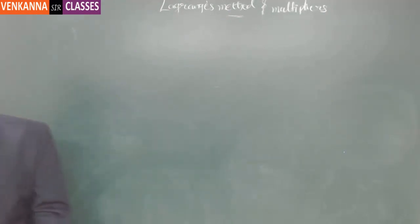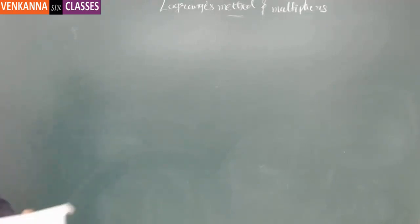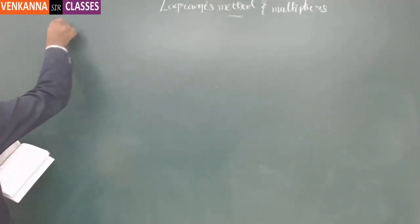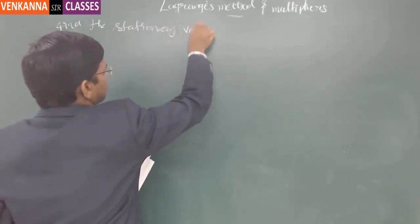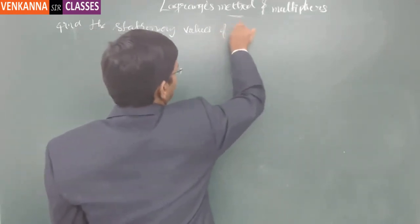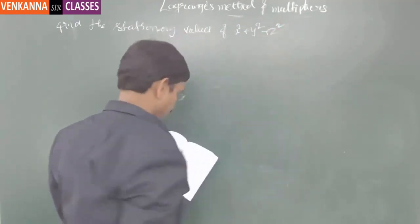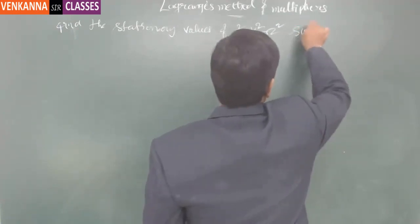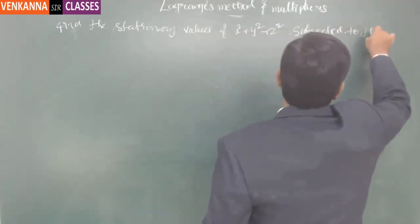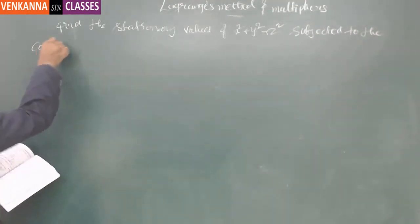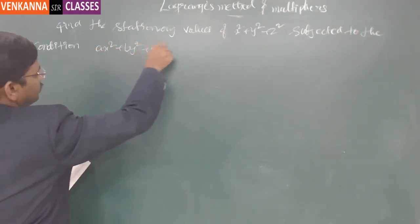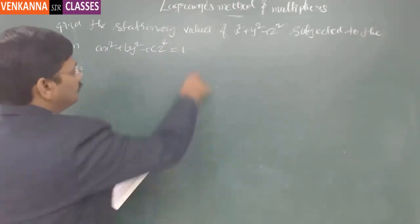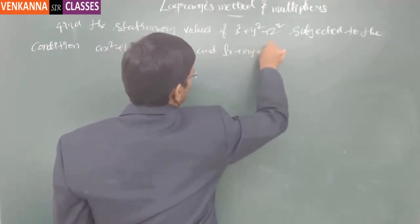Note down this famous problem, which is the two different constraints problem — usually given in all examinations. Find the stationary values of x² + y² + z² subjected to the conditions ax² + by² + cz² = 1 and lx + my + nz = 0, and interpret the result geometrically.